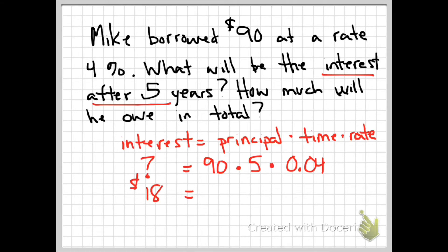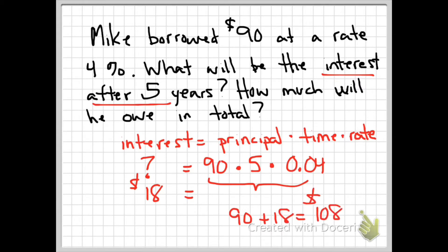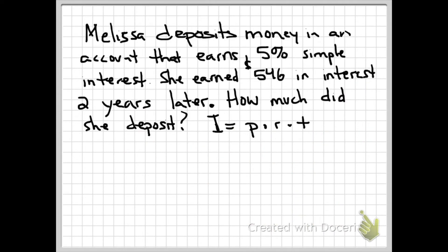After we do all the multiplication — 90 times 0.04 times 5 — we can see that Mike's interest will be $18. Not only does he have to pay the $18, he also has to pay back the $90 he initially borrowed, which means his total is going to be $108.